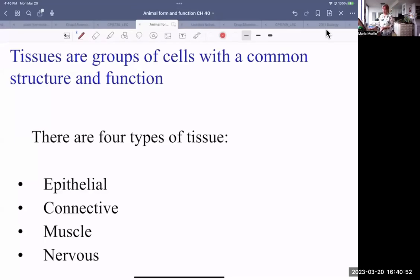Welcome back to Animal Form and Function for Biology 1200 at Vancouver Community College. We were talking about animal form and function in general, some development of complex structures from simple structures.